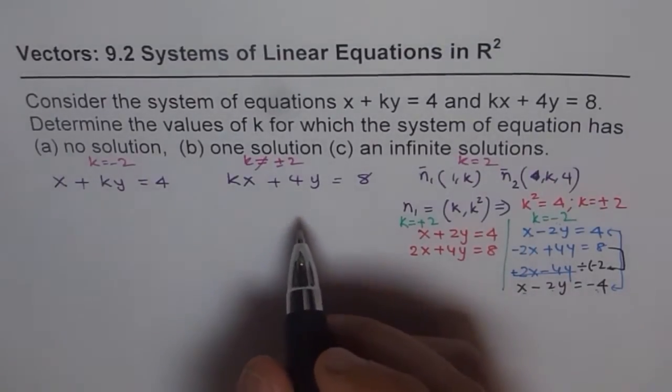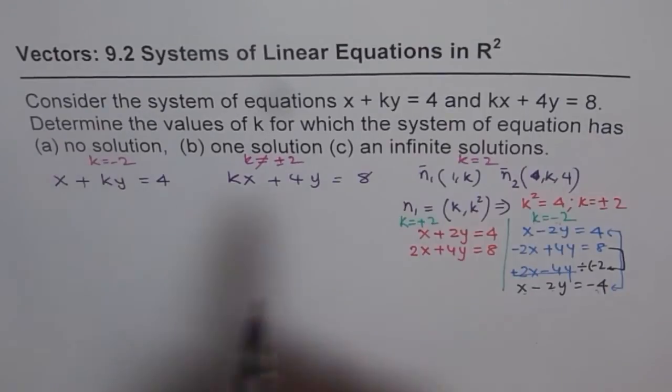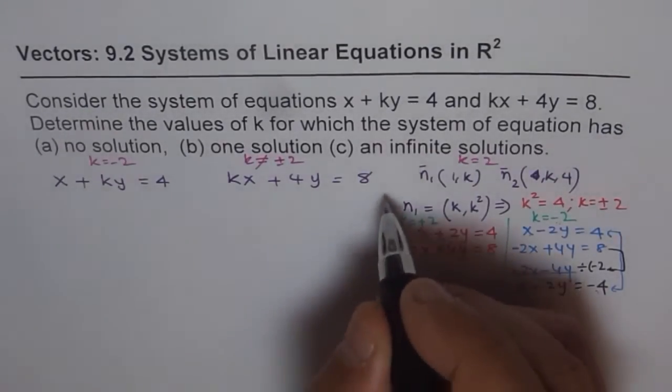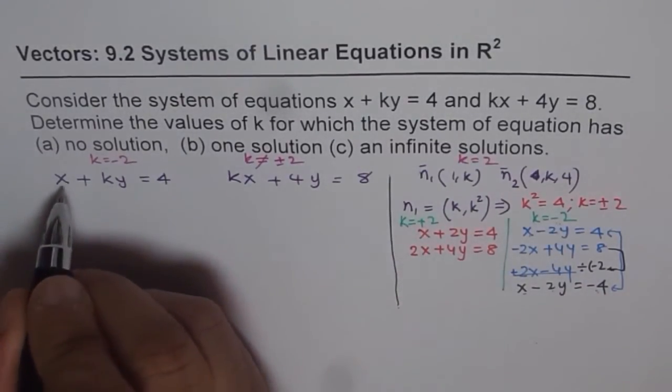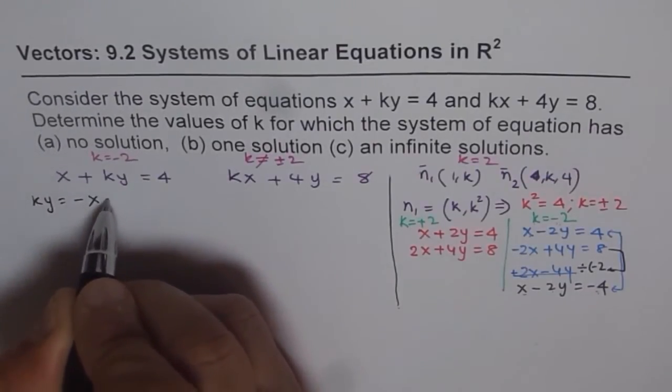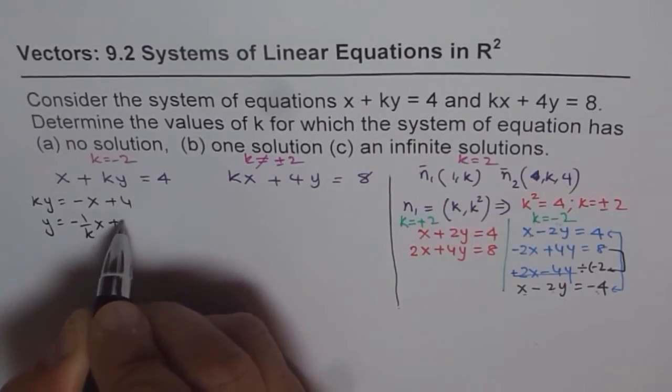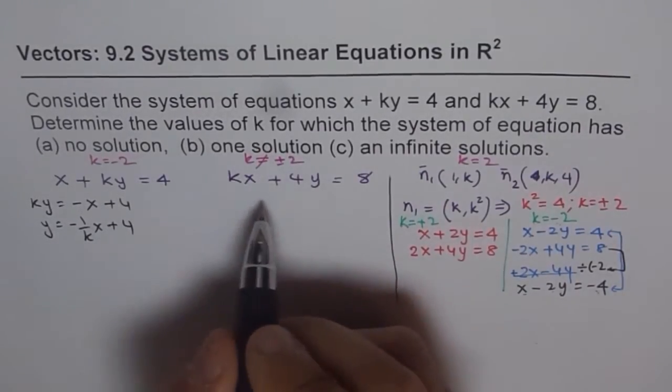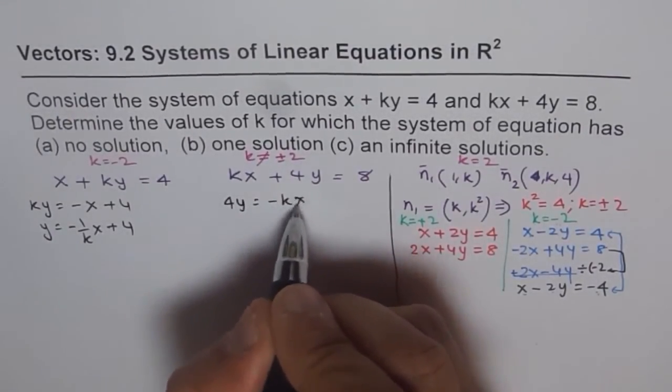The second approach is, we can write them in slope-intercept form, and then find they should have same slope for no solution or infinite solution. So let's do that second approach. We'll write what is y equals to? I can write ky = -x + 4, and y = -1/k x + 4 for this equation.